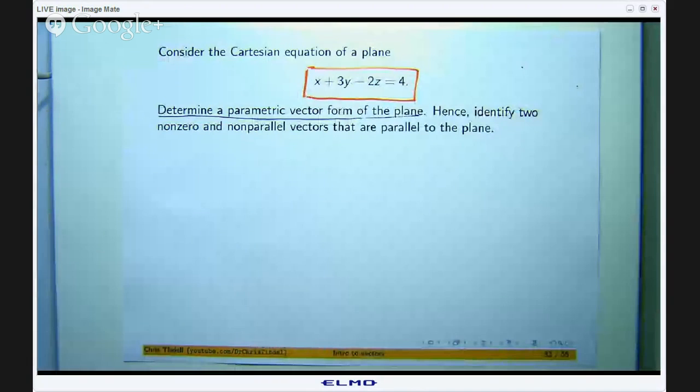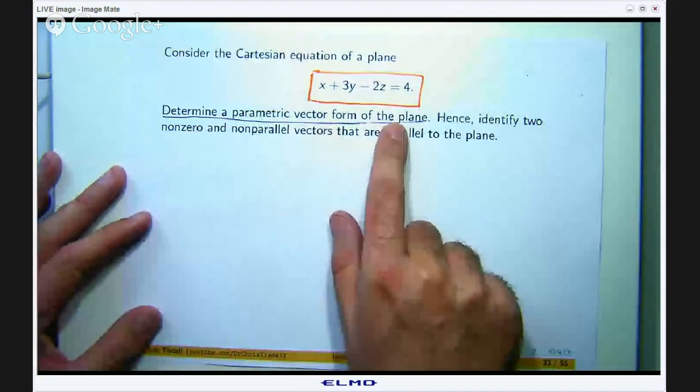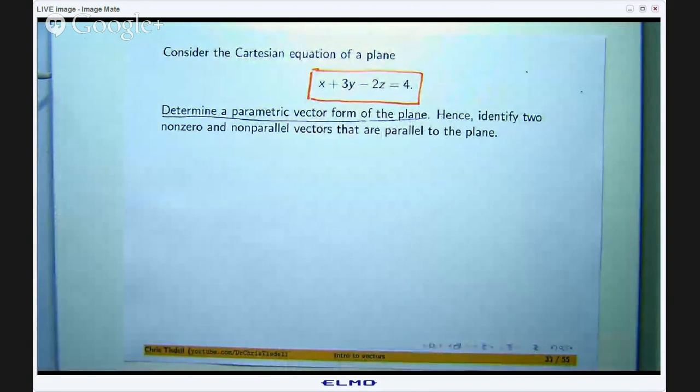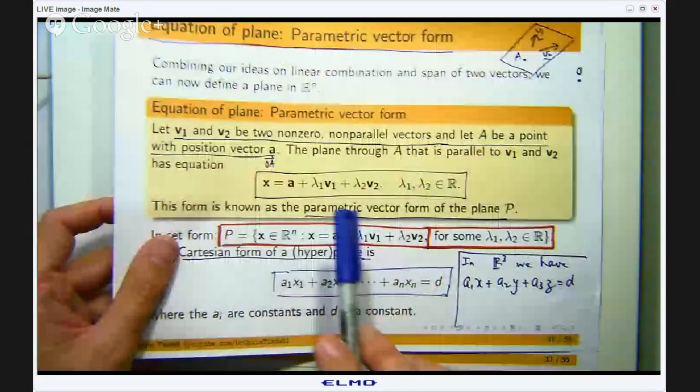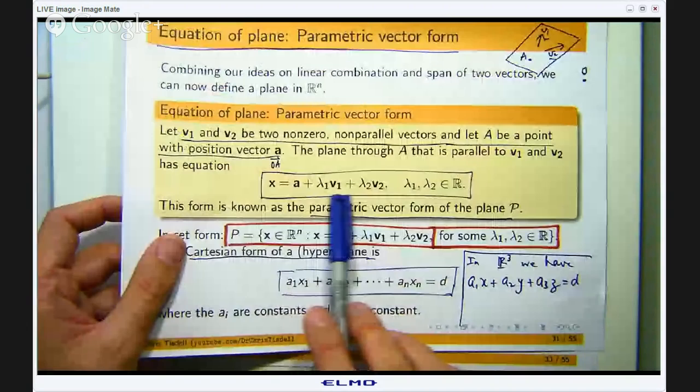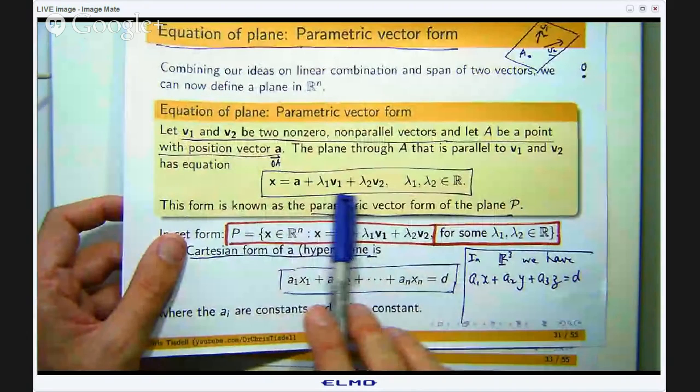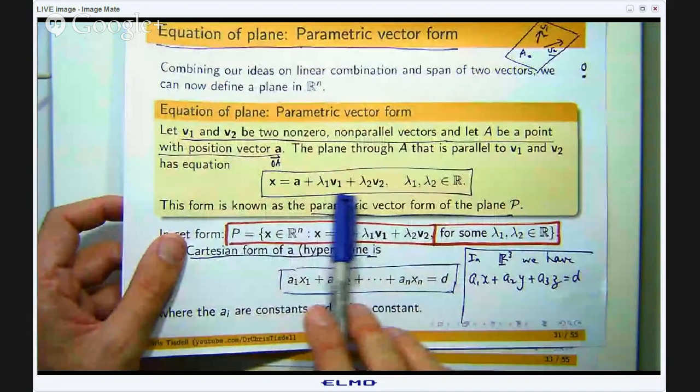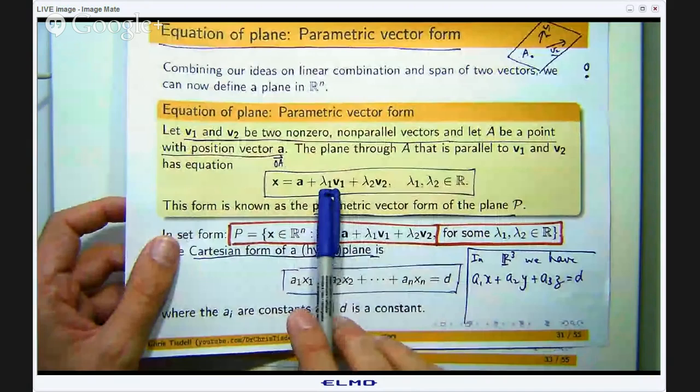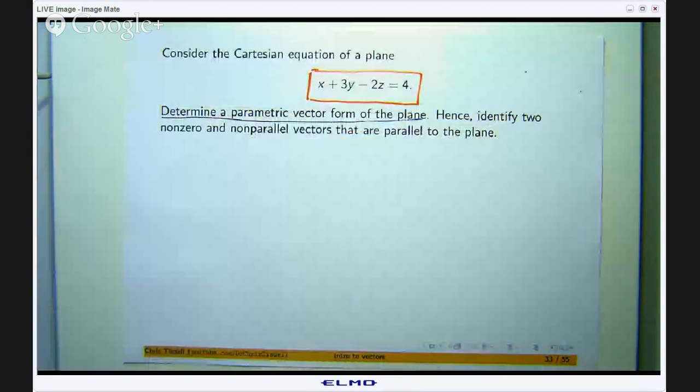Because basically two vectors that are non-zero and non-parallel span a two-dimensional set which will be a plane, and to get onto that plane I just need to get to a. So that is why the a is there. So what do we need to do here? We need to determine a parametric vector form of the plane. So how do I do that?